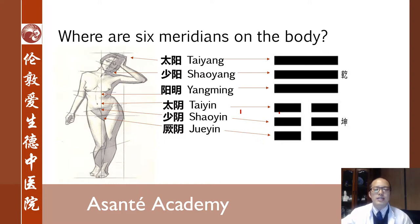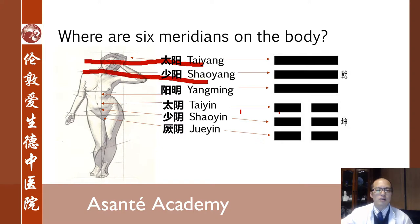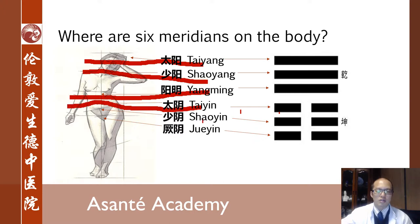There are six layers of the body. Let's talk about the trunk of the human being. Taiyang is on the head. Shaoyang is on the throat. Yangming is at the stomach. Taiyin is at the belly button level. Shaoyin is below the belly button. Jueyin is at the lowest part of the body trunk.